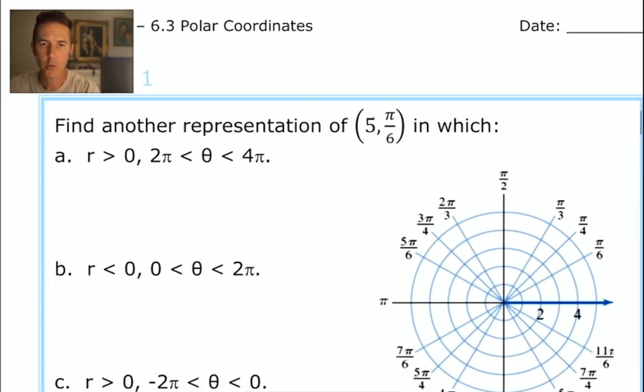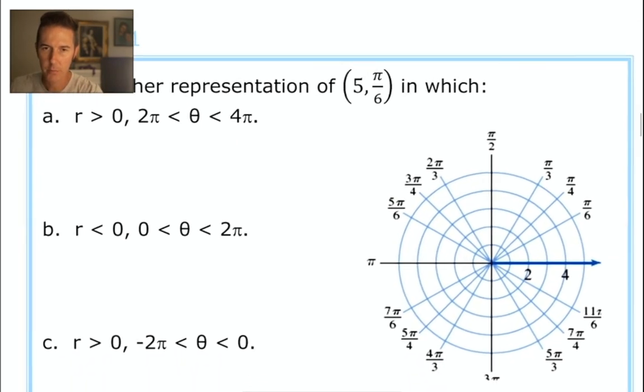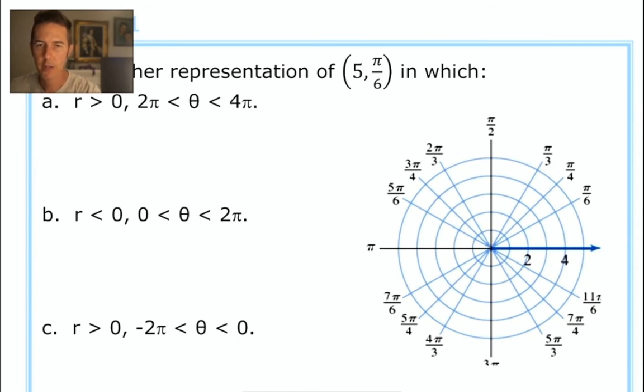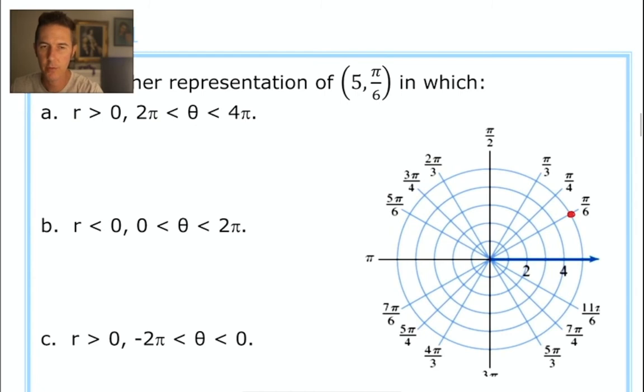So in this exercise, we want to find other ways of getting to this point, and some additional constraints are given to us. Here we've got an r value that's greater than 0, and we have to use a theta value that's between 1 and 2 full rotations, so between 2 pi and 4 pi. Let's plot the original point since we've been given this really nice graph. We're aiming in the direction of pi over 6, and we have moved 5 units in that direction away from the pole, so that puts us out here.